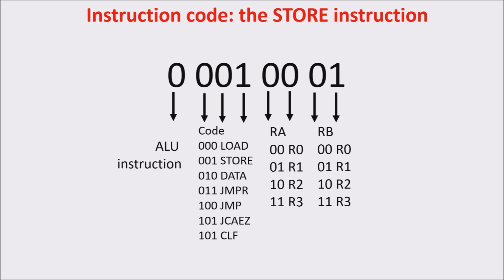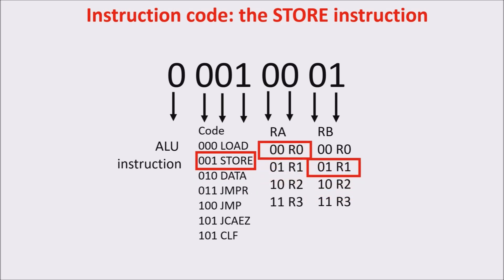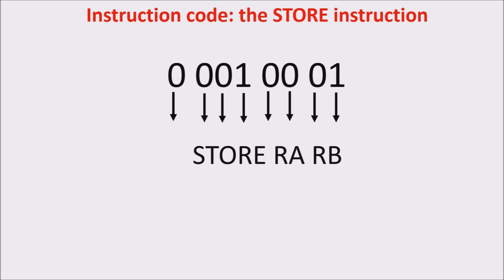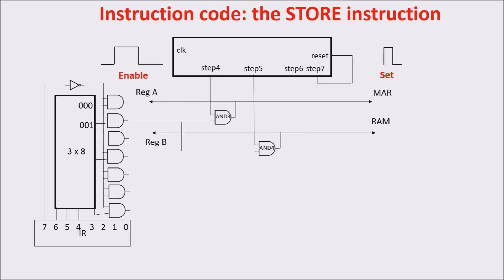Now we see the STORE instruction. STORE instruction is used to store a byte from a register to RAM. In this case, the instruction states STORE R1 to RAM, being the address in R0, or more generally STORE RB to RAM, being the address in RA. Now we see how to execute the STORE instruction in steps 4 and 5.